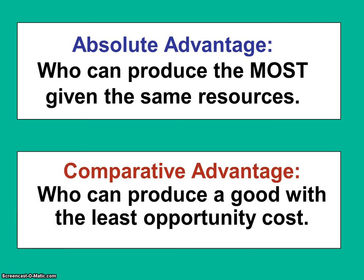The theory of comparative advantage came about more recently — in the last couple hundred years — and when it was discovered it was a big breakthrough in the arguments for free trade and no barriers to trade. Comparative advantage helps us figure out that the person who can produce a good with the least opportunity cost should specialize in production of that item. If you can identify who has the comparative advantage in production of each good, we can help produce more overall.